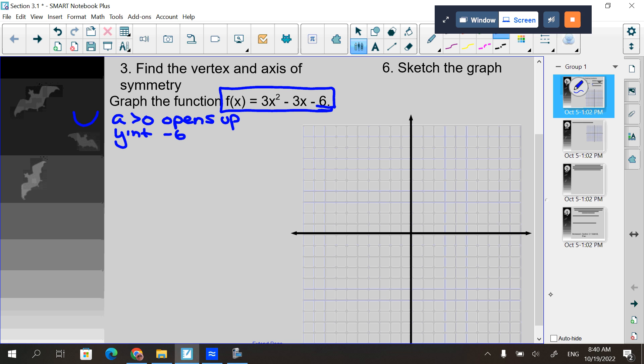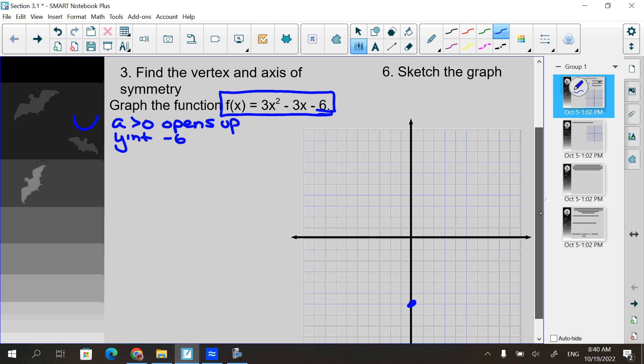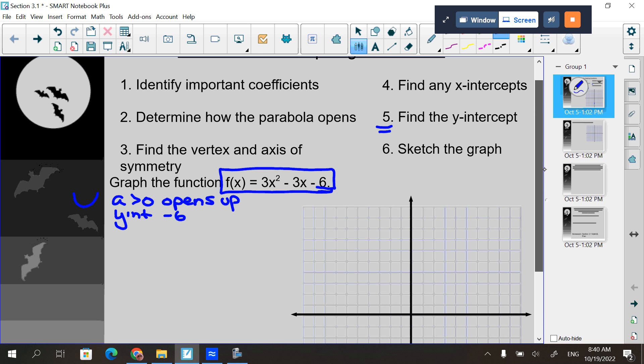And I'm going to go one, two, three, four, five, six. I know it crosses the y-axis right there. The second thing is to find any x-intercepts.